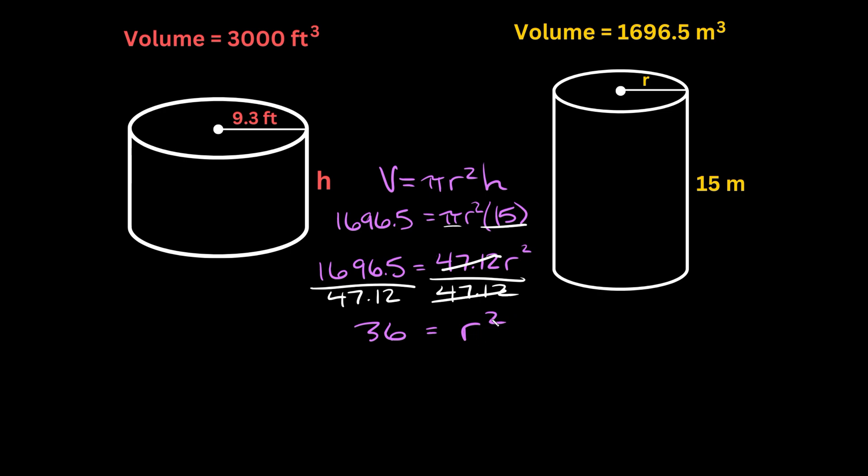So to solve for r squared, we need to get rid of this exponent. We can do that by taking the square root of both sides. So then on this side, the square root or the radical and the squared exponent cancel out, and we're left with just r. So r is equal to the square root of 36, which is equal to 6.